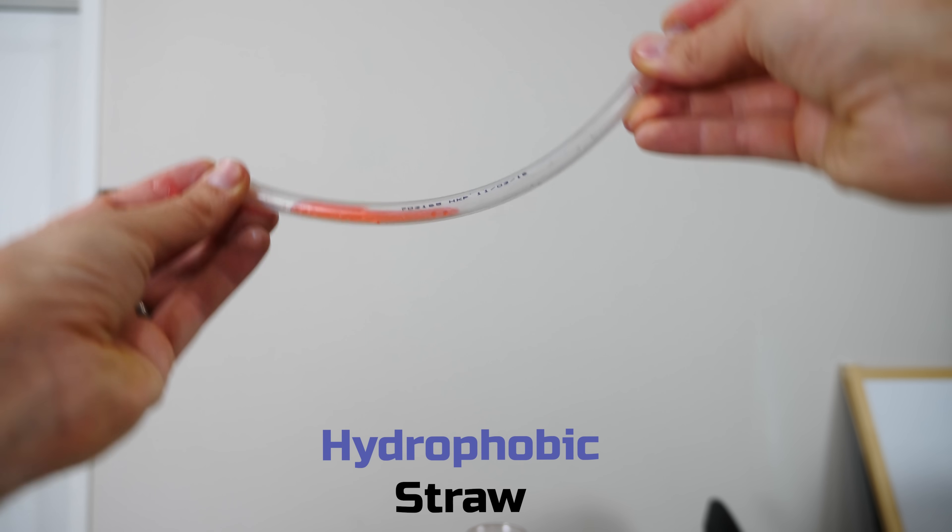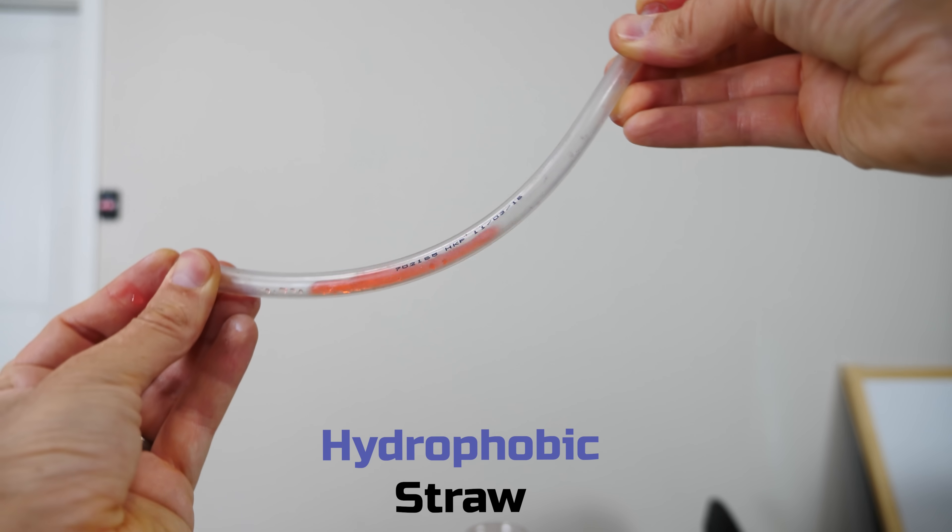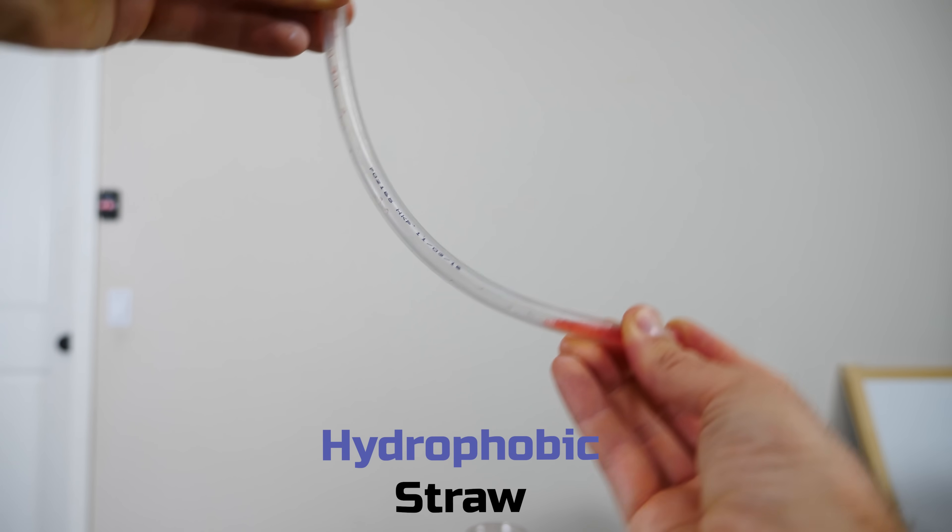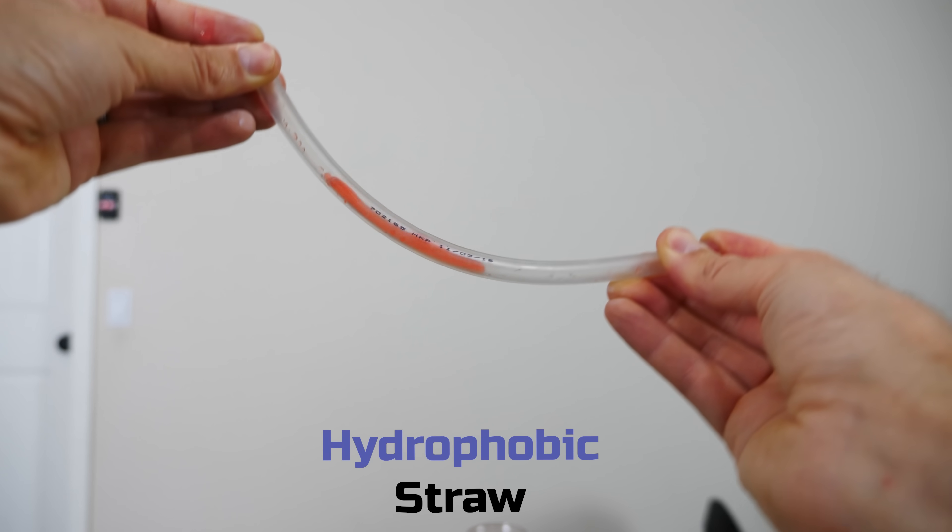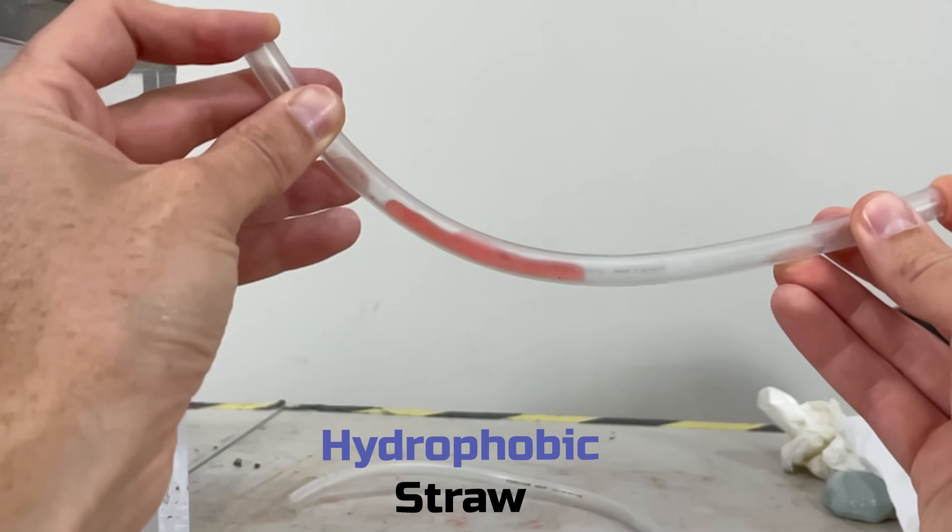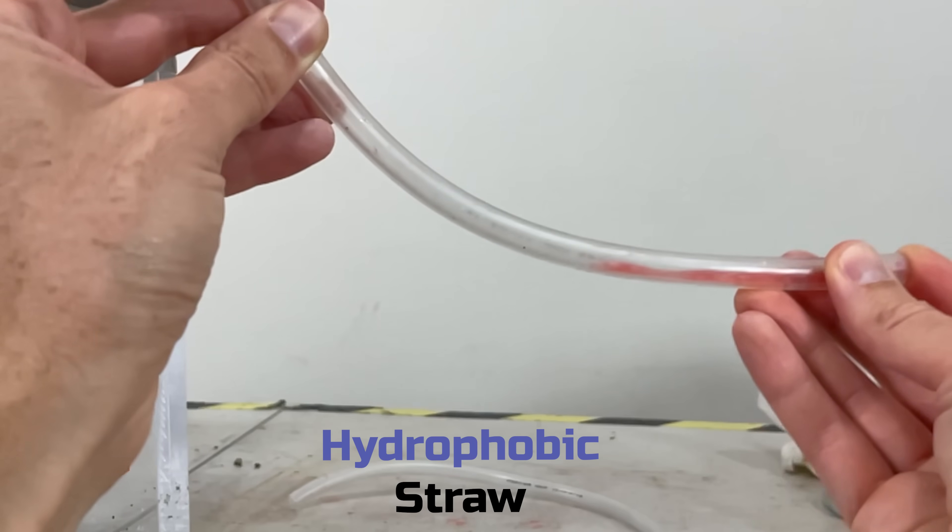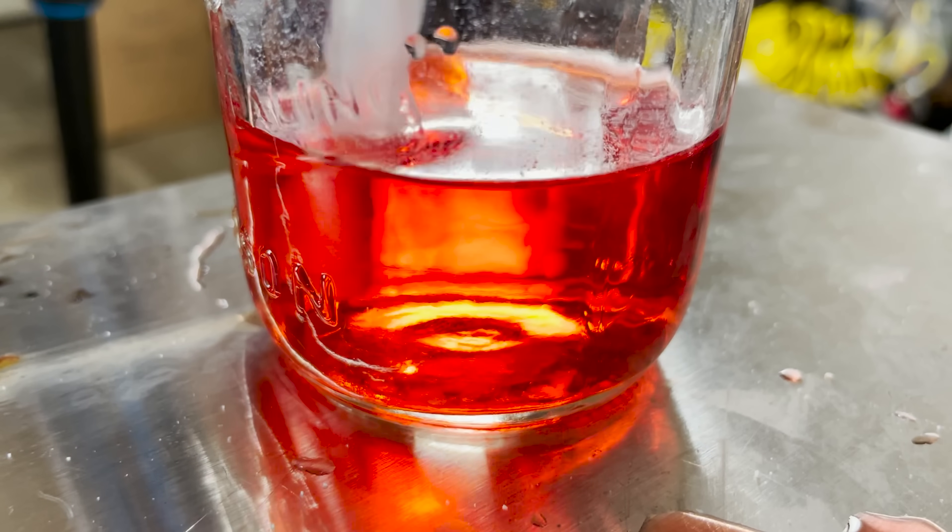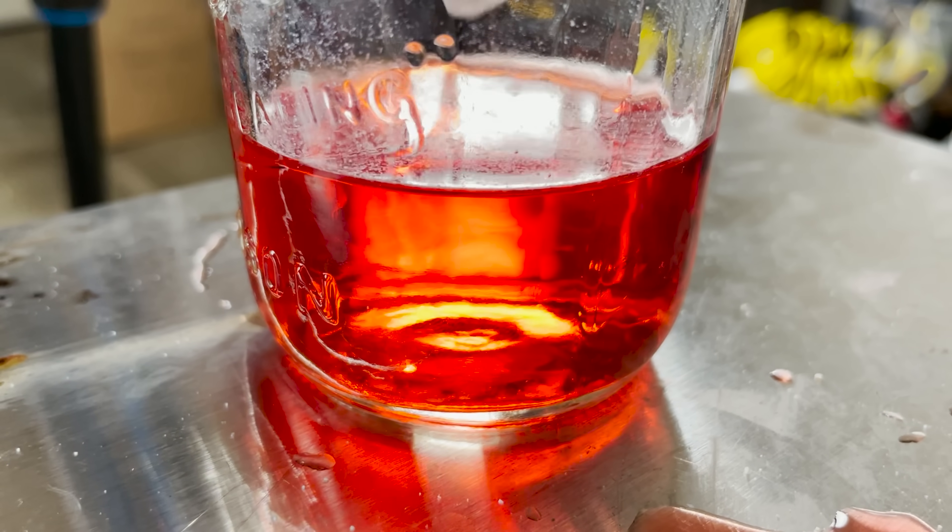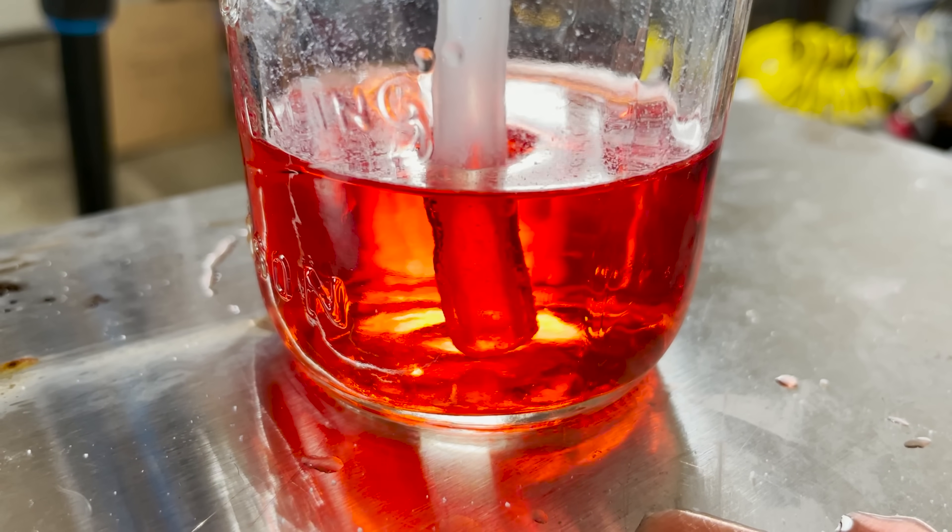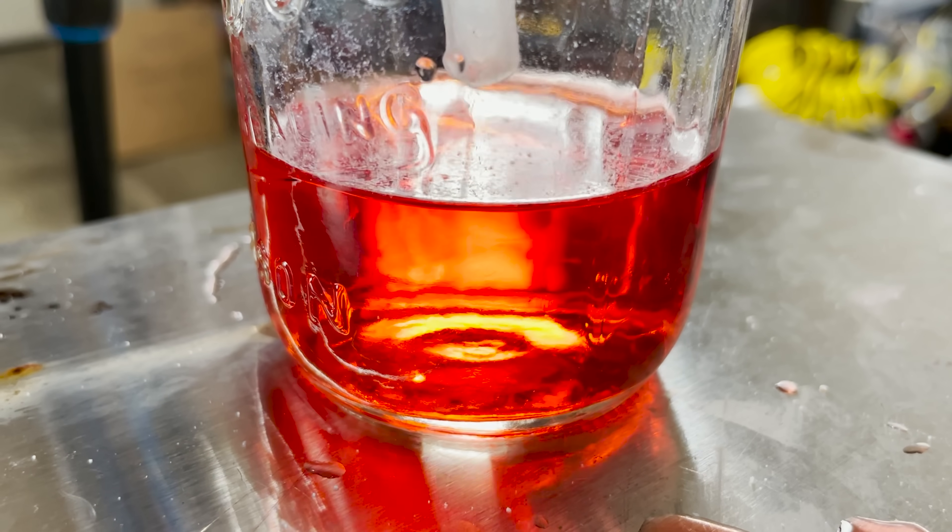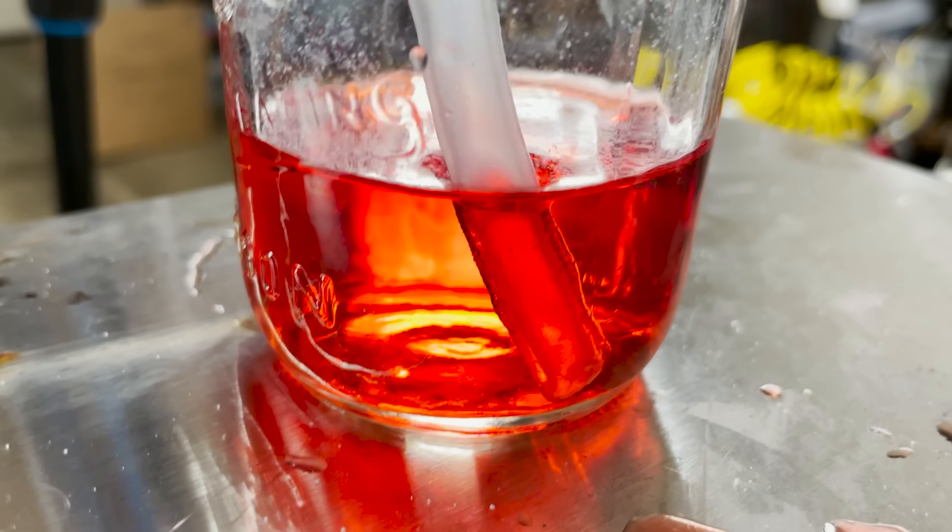But look at my hydrophobic straw. Plug the ends and it can still move just fine. You can see that the liquid dents in around it. You can also see how it's shiny around it. That's because there's air surrounding the inside and outside of the straw.